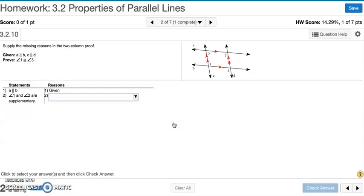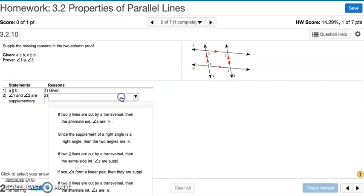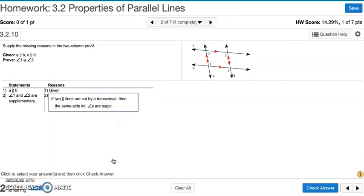Number 2. Supply the missing reasons in the two-column proof. We are proving that angles 1 and 3 are congruent. Our second statement says angles 1 and 2 are supplementary. Angles 1 and 2, we notice, are same-side interior angles. So that's why they're supplementary. Same-side interior angles are supplementary to each other.